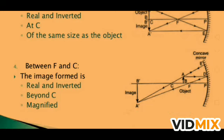Next: when the object is between F and C. Light rays come parallel to the principal axis and pass from the focus; the second ray comes from C and reflects back along the same path. The image is formed beyond C. The properties of the image are real, inverted, beyond C, and magnified — magnified means the image is bigger than the object.